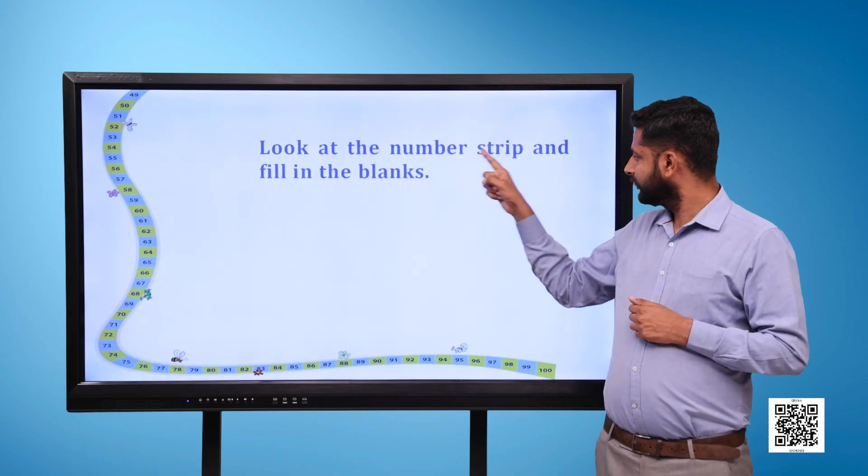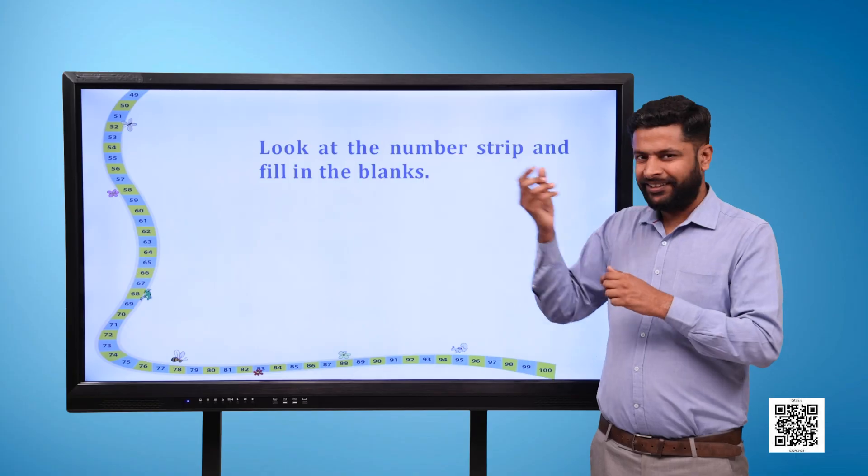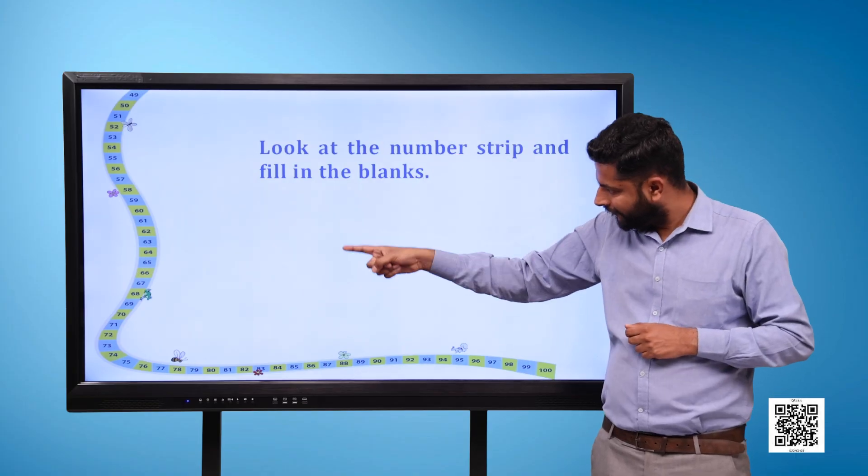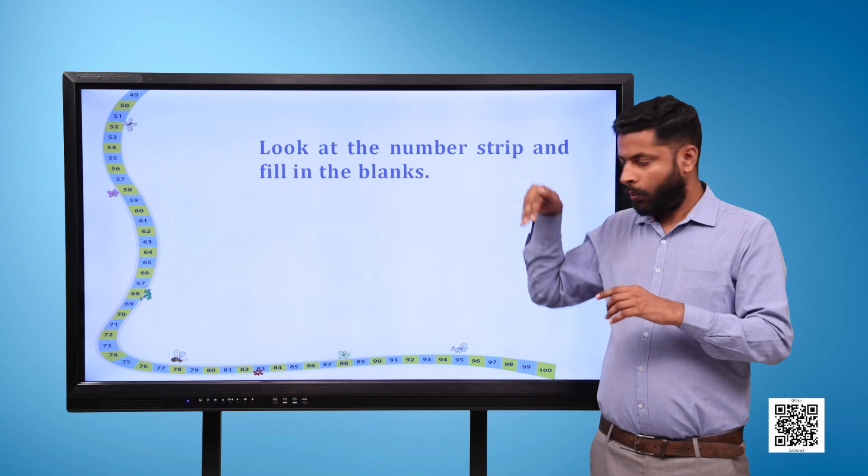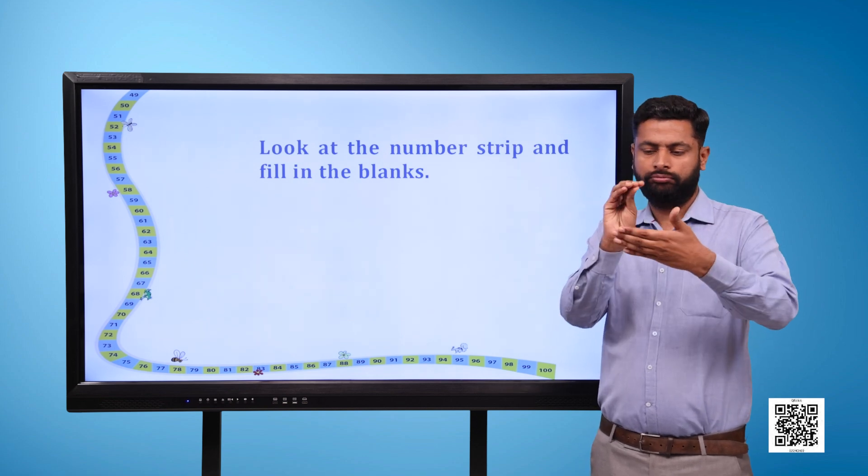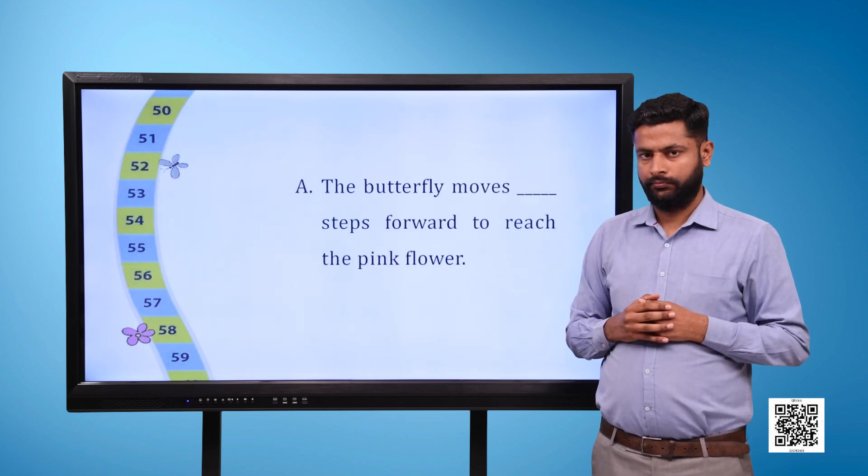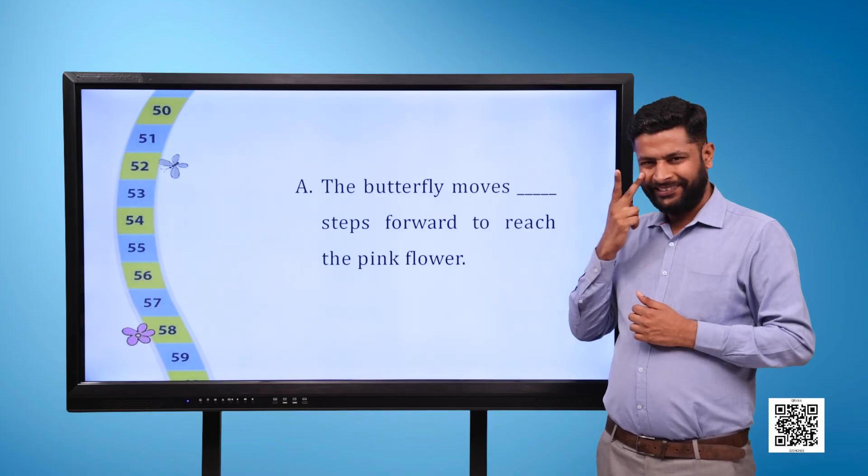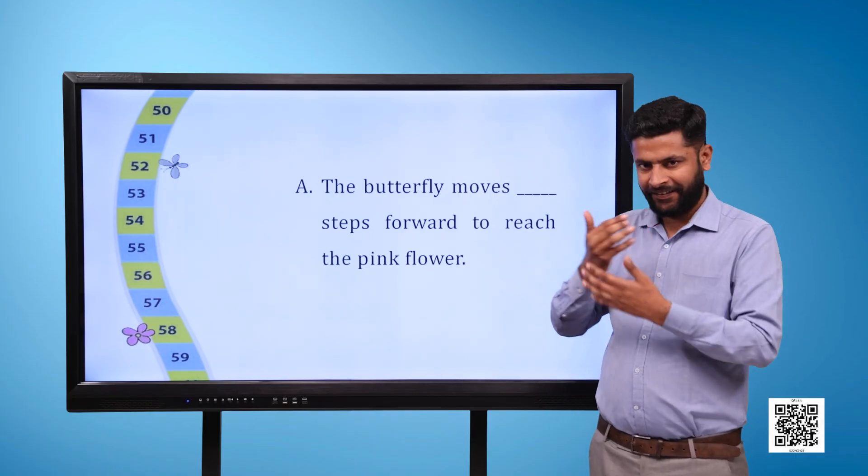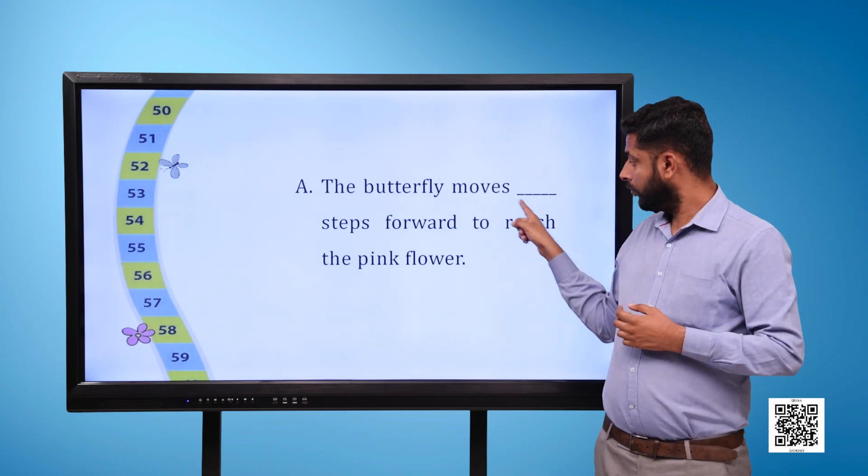Look at the number strip and fill in the blanks. On the left side of the page we have a number strip. The numbers start from 49 and end at 100. The butterfly moves blank steps forward to reach the pink flower.